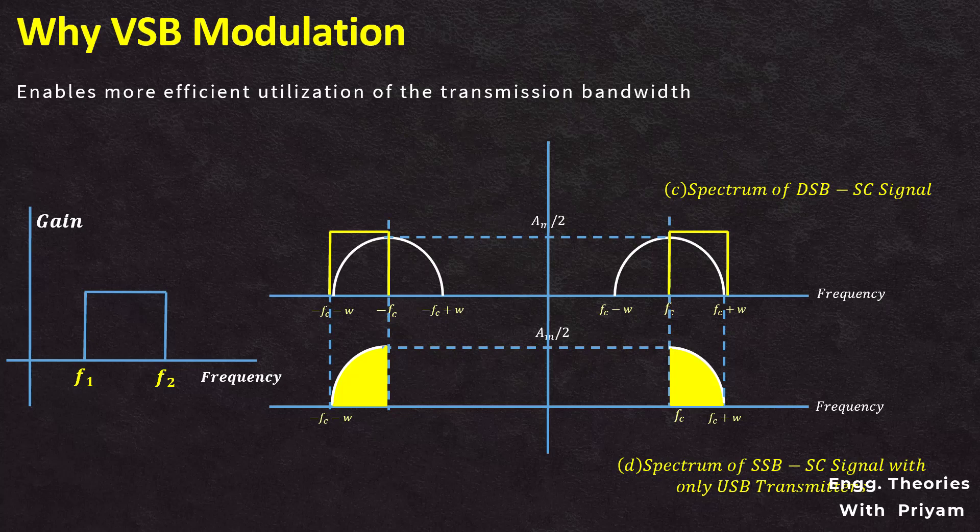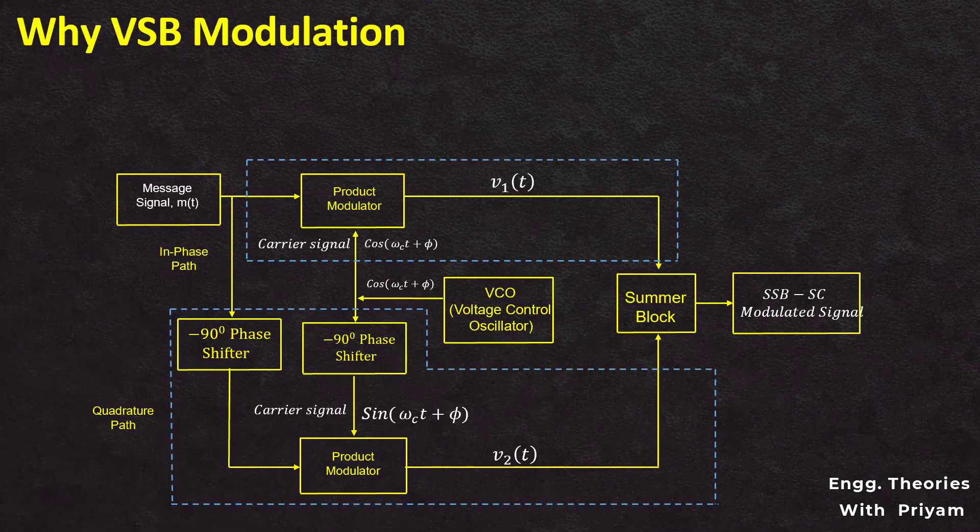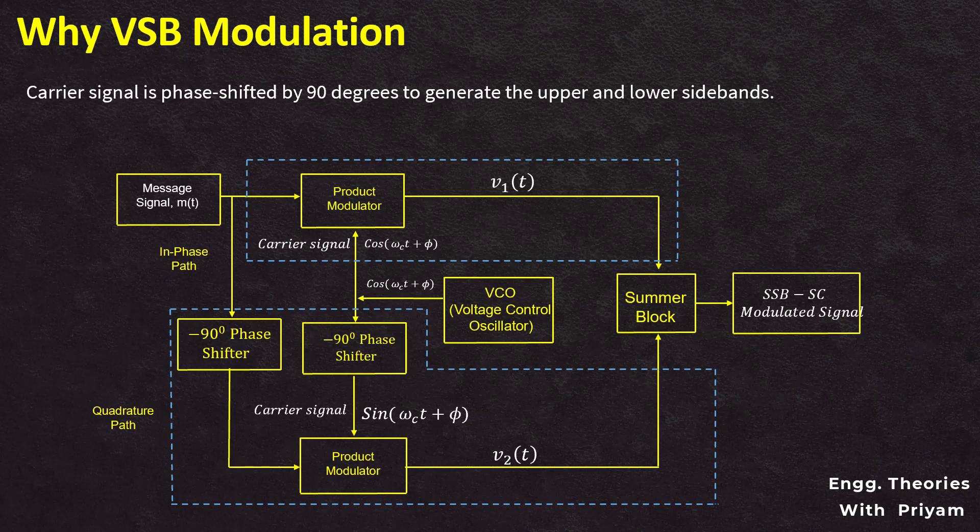To overcome this challenge, practical filters with finite bandwidth and some attenuation are used. These filters can eliminate most of the unwanted sideband but cannot eliminate it completely, so the SSB-SC signal will always have some distortion. In the phase discrimination method of generating SSB-SC, the carrier signal is shifted by 90 degrees, but a perfect 90-degree phase shift is impossible in practice due to noise and other disturbances.